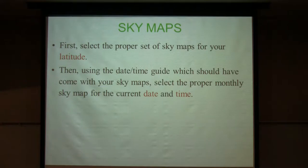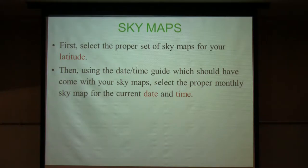Notice where the planisphere has the date and the time. If you look at today's date and turn the wheel until the present time — around 8:30 PM — shows up, then what you see on that sky map is what you would actually see outdoors, were it not overcast and so bright with stadium lights out there.